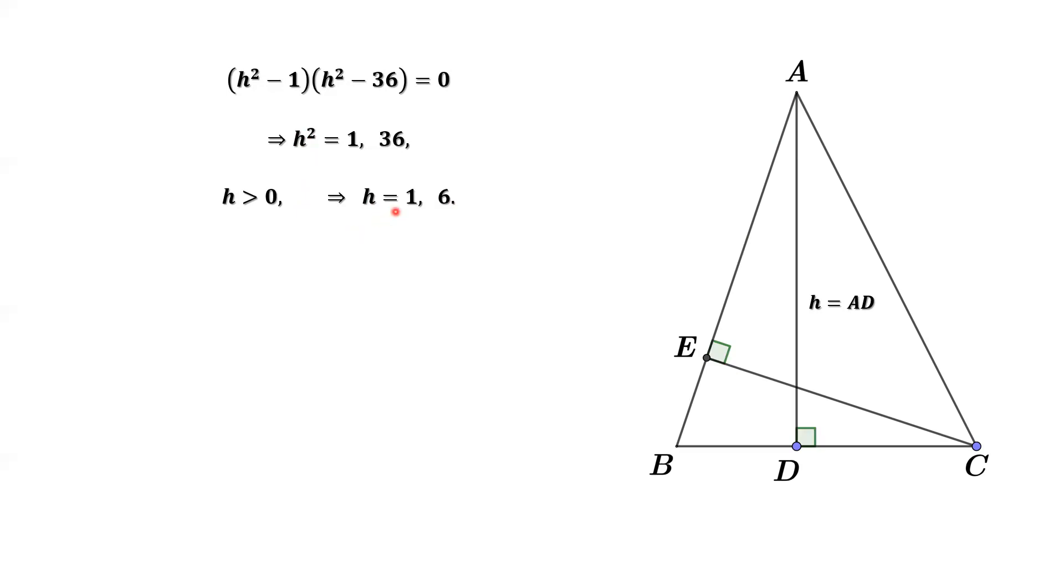If H equals 1, what does that mean? BD equals 2. H equals 1. Roughly here. Look at here, this right triangle. This angle is much bigger than 45. But from given condition, this angle is 45. So it is impossible. The conclusion is that H cannot be 1.